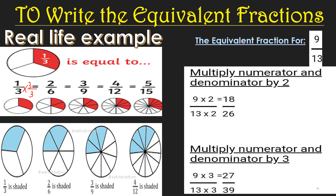Multiplying 1/3 by 4/4: one fours are 4 and three fours are 12, giving 4/12. Next, for 5/15: 1/3 multiplied by 5/5 — one fives are 5 and three fives are 15. So the equivalent fractions of 1/3 are 2/6, 3/9, 4/12, and 5/15.